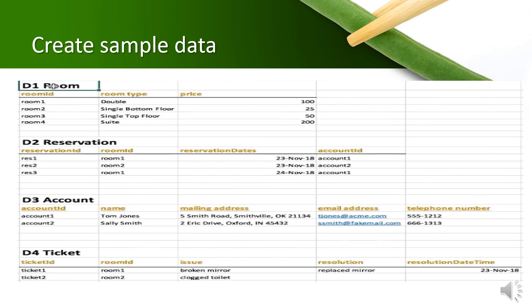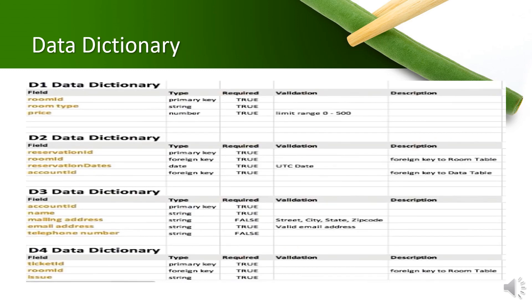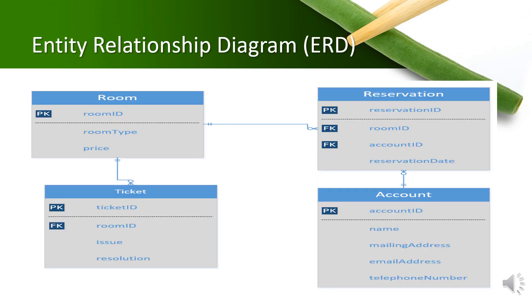Next, let's try to create sample data for each data store according to the attributes that have been identified. The sample data is useful to illustrate the linkages between data residing in each data store. This diagram that we use to illustrate the linkages or the relationship between data stores is named the storyboard of linkages. Based on the storyboard and the sample data, we can create the data dictionary for the hotel information system. Based on the storyboard as well, we can create an entity relationship diagram. We are using the crow's foot notation available in Microsoft Visio to draw the diagram. That's the final outcome of the case study.